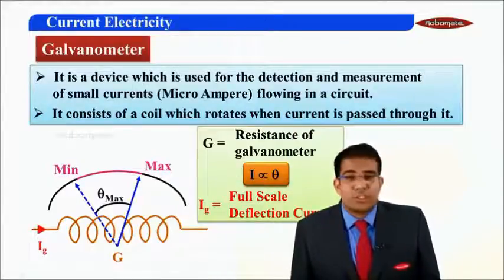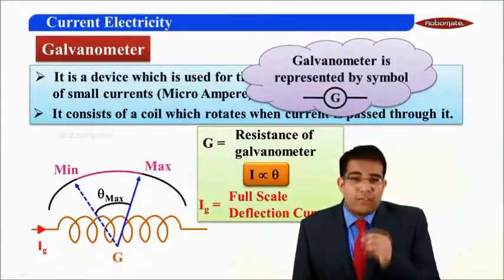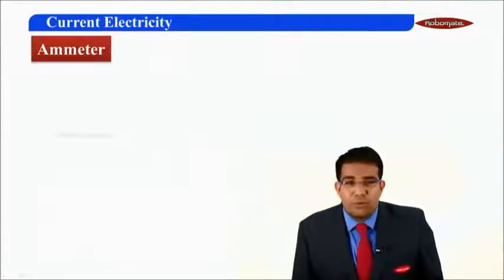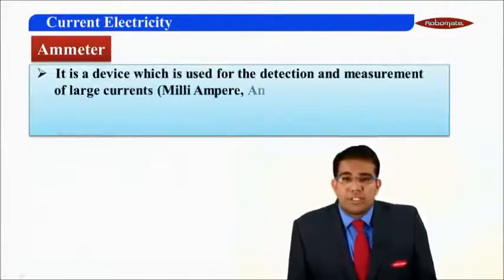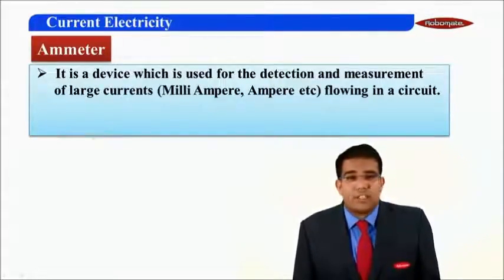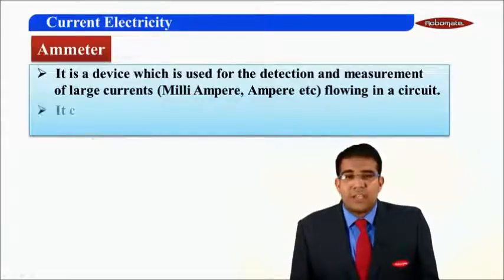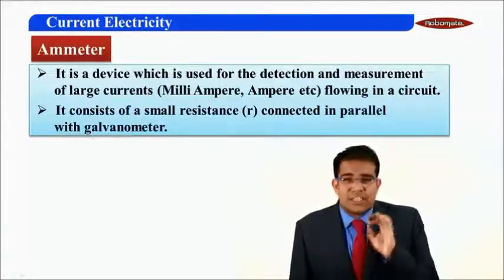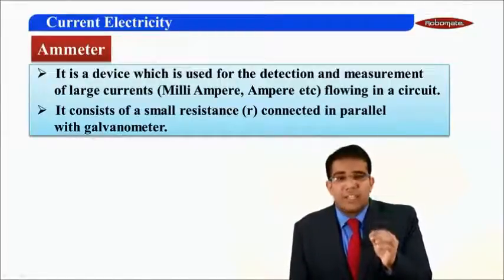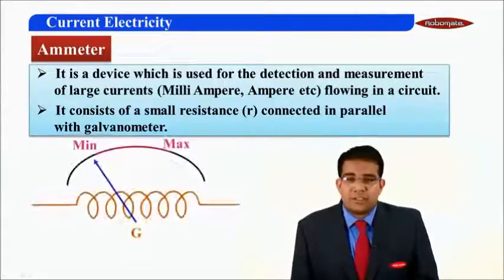Now we will use this theory to make a new instrument called the ammeter. The galvanometer is represented by the symbol G. The ammeter is a device used for the detection and measurement of large currents, like milliampere or ampere, flowing in a circuit.